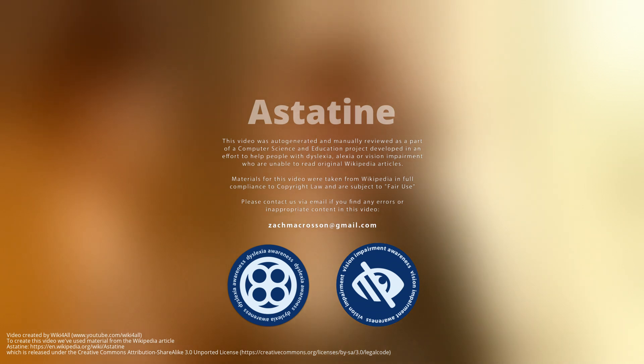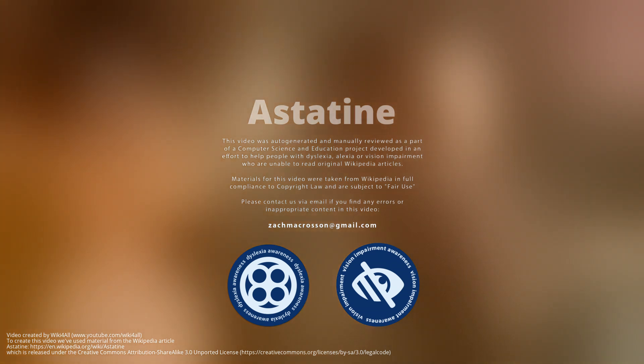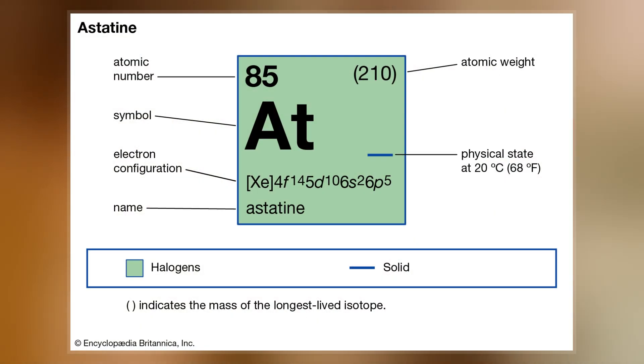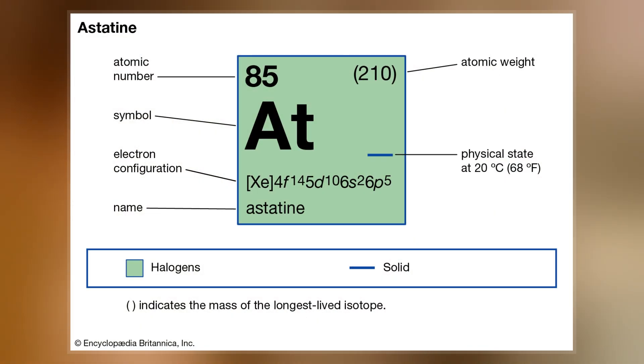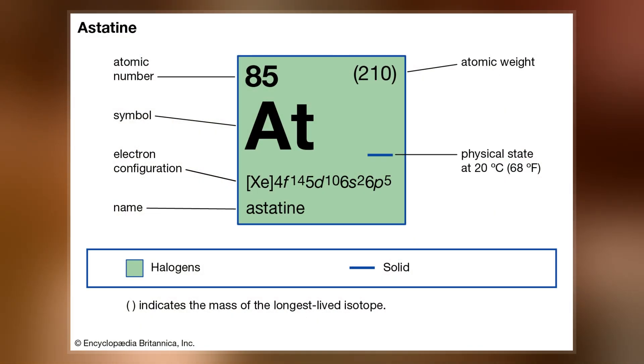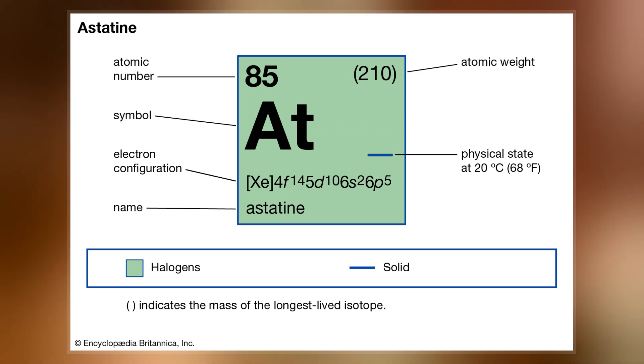Astatine is a chemical element with the symbol At and atomic number 85. It is the rarest naturally occurring element in the Earth's crust, occurring only as the decay product of various heavier elements.